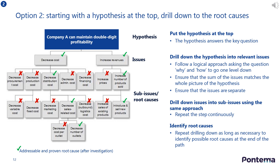From the pyramid tree on the slide, you can see that Company A needs to maintain double-digit profitability. The subsequent drill-down analysis has shown that the company can do this by decreasing distribution costs via a reduced number of outlets, and by increasing the number of products sold by introducing new products.